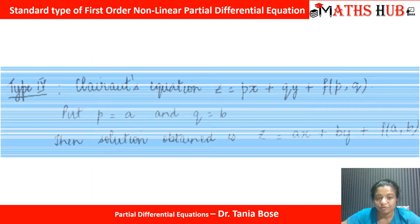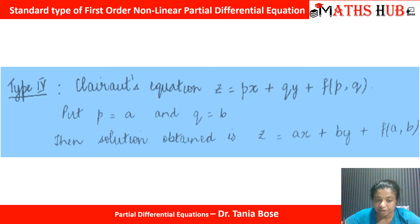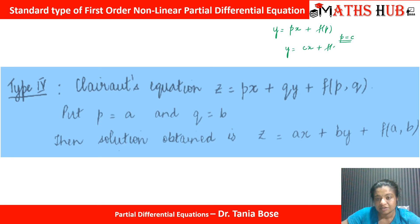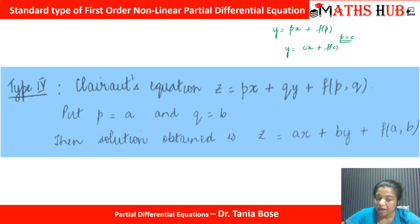Finally, we move to Type 4: the standard Clairaut equation. The equation should be expressible as z = Px + Qy + F(P,Q). In ordinary differential equations the Clairaut form was y = Px + F(P), solved with P = C. Similarly here, the solution is obtained by putting P = A and Q = B, giving z = Ax + By + F(A,B).